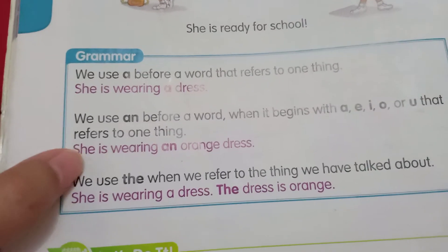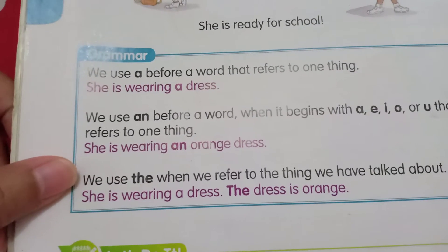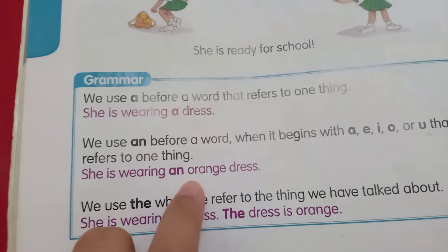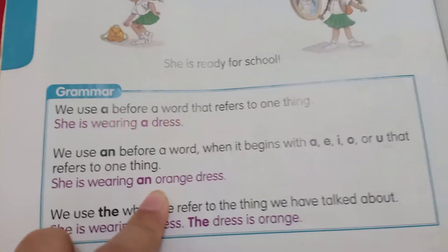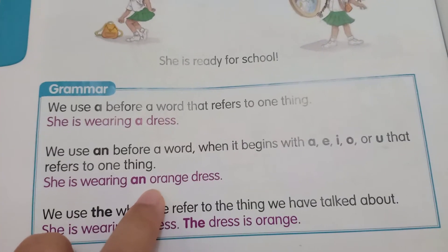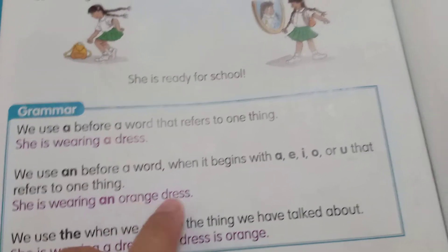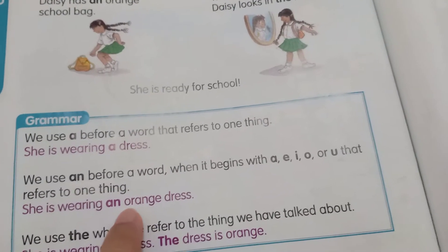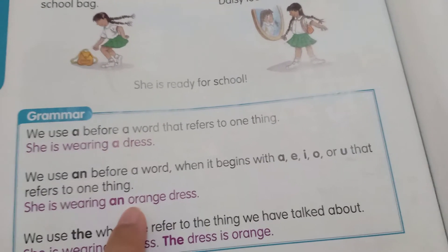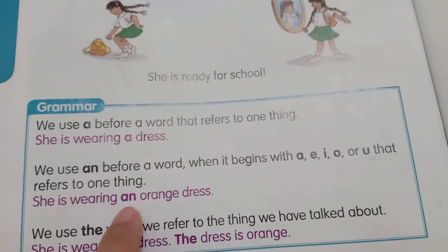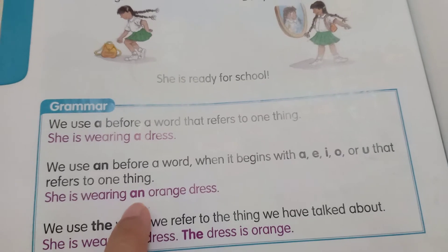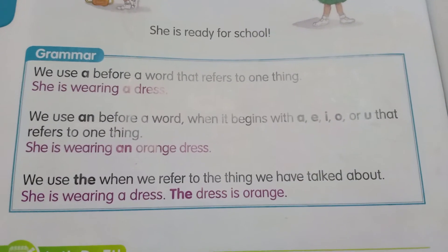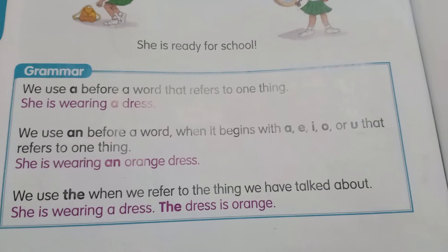For instance: she is wearing an orange dress. Look at 'orange' — O begins with O, which is a vowel. So we use the article 'an'. And then we use 'the' when we refer to things we have already talked about.